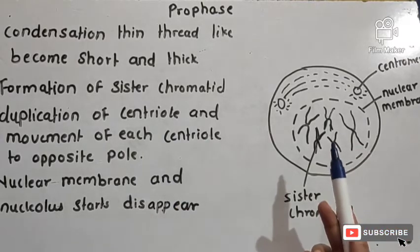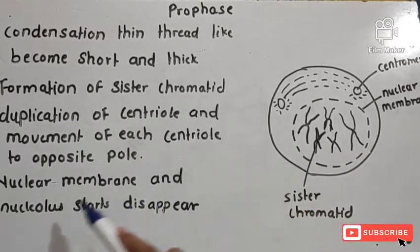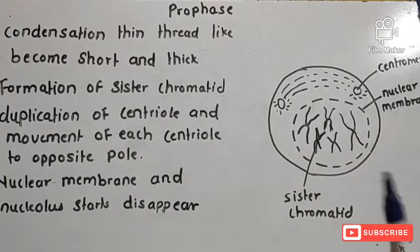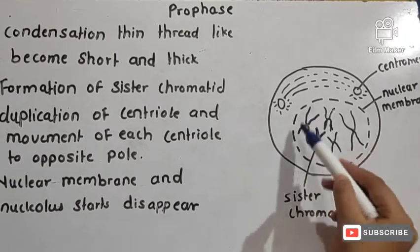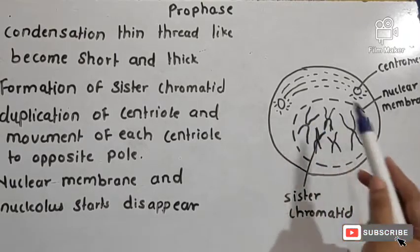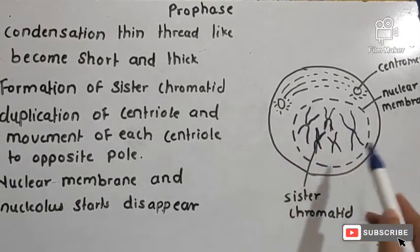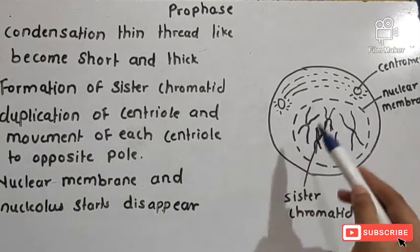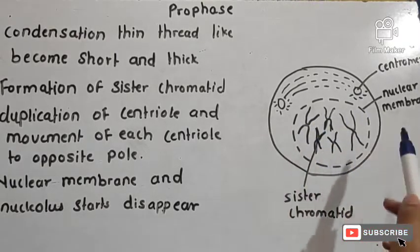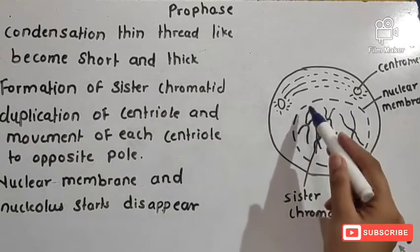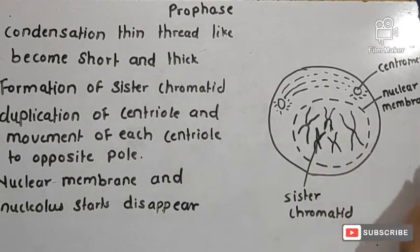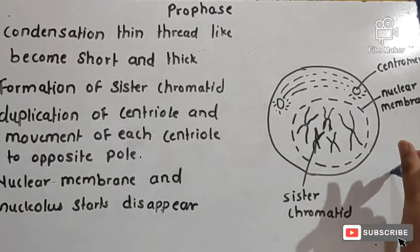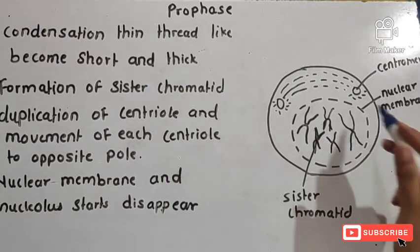For further division, the nuclear membrane starts to disappear. The nuclear membrane and nucleolus start to disappear during prophase. This is a key characteristic of the prophase stage.